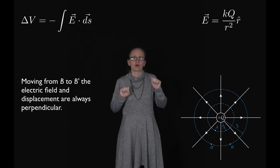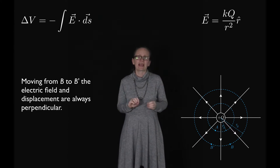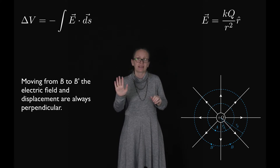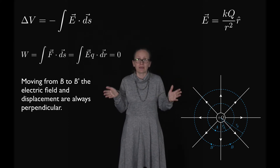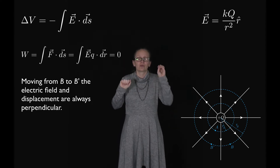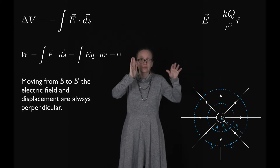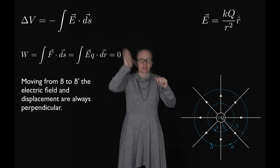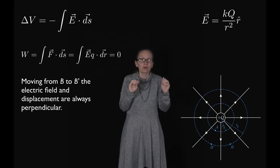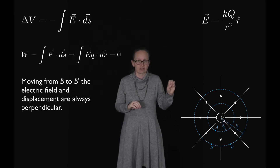When moving from B' to B, the electric field is always perpendicular to the direction of motion. So the electrostatic work is zero, because the work equals the force dotted with the displacement — integrated along the path — and since the force (EQ) is perpendicular to the displacement, the dot product gives zero.